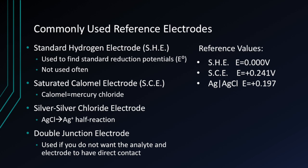The SHE is not actually used often because it is an ideal — the activity would be one, which means the pH would actually be zero, which isn't seen. As a result, it's used as a reference for the other two. The saturated calomel electrode has an electric potential of +0.241 volts vs. SHE, and the silver-silver chloride electrode is +0.197 volts vs. SHE. A double junction electrode can also be used if you do not want the analyte and the electrode to have direct contact.